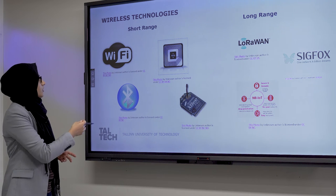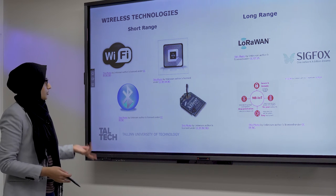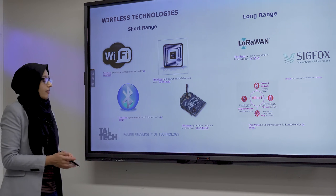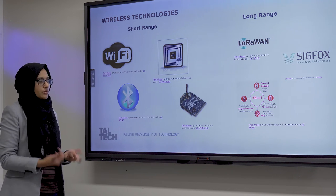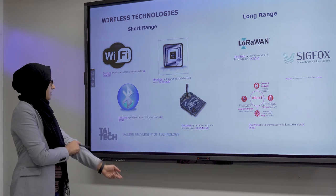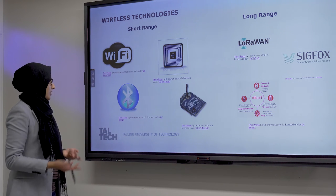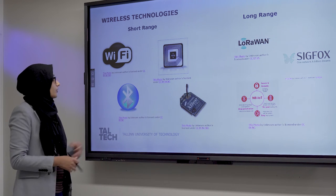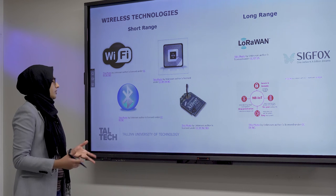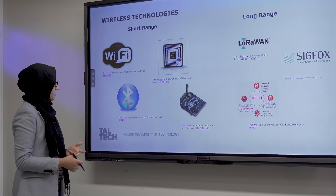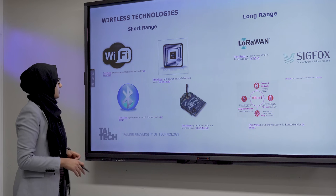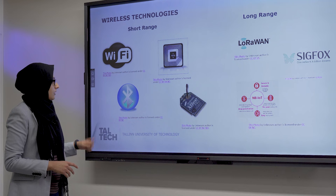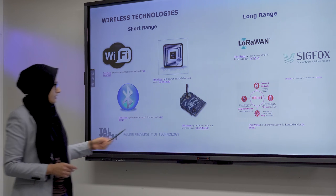Looking at short-range technologies, we have Wi-Fi, RFID, Bluetooth, and ZigBee. Wi-Fi is well-known; RFID and NFC are famous and used in secure payments every day. Bluetooth is also in our phones. Initially, Bluetooth's power consumption was higher and it was not as secure, but with improvements we are now achieving a good data rate and good range. ZigBee, compared to Bluetooth, has a higher range but lower data rate.